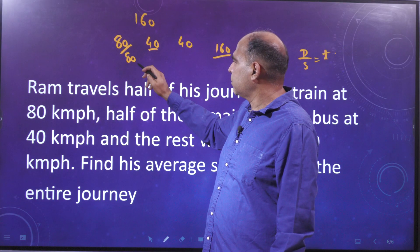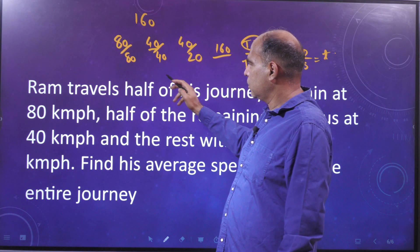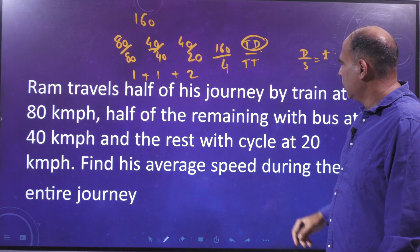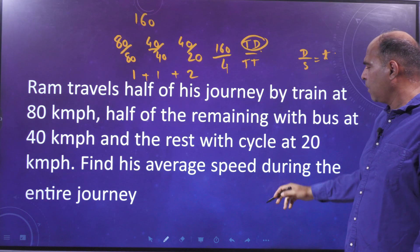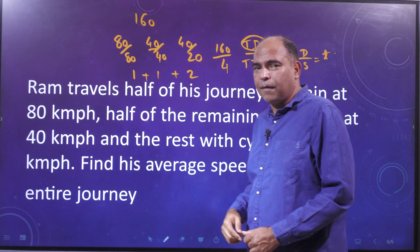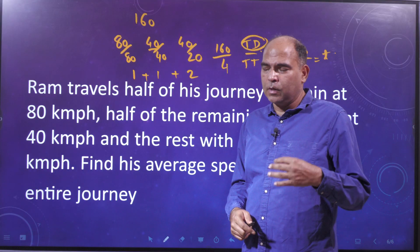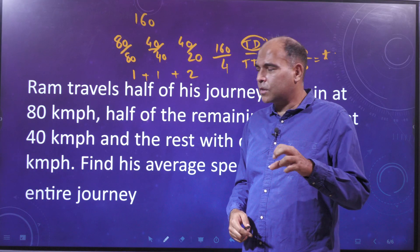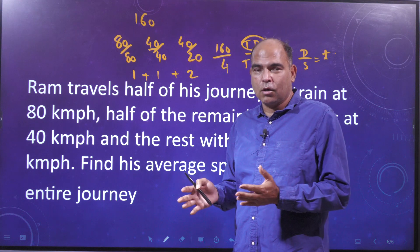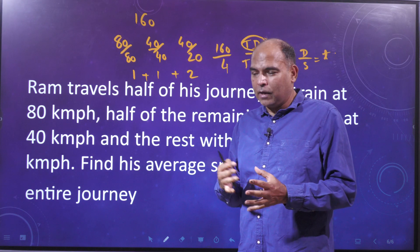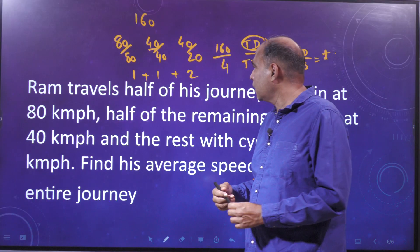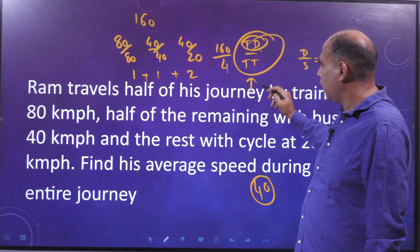He takes 1 hour by train, 1 hour by bus, and 2 hours by cycle — total time is 4 hours. Average speed is 160 divided by 4, which equals 40 km/h. The best approach for average speed questions is always total distance by total time. Other formulas like the alligation method or the 2s₁s₂/(s₁+s₂) formula can apply for special cases, but total distance by total time is the most reliable.